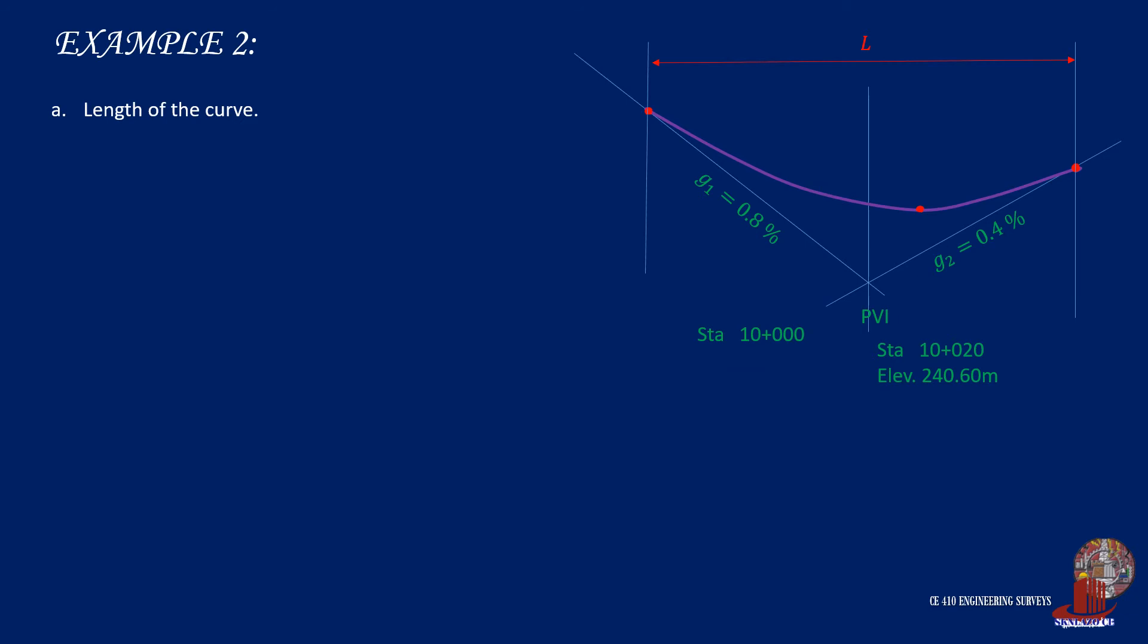The length of the curve is computed using the rate of change. Solve N or the number of change with a formula to have N equals 8. The length is computed as product of 20 meters with the number of intervals, which is 8, giving the length of 160 meters.